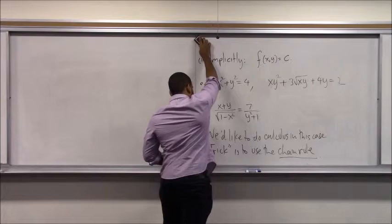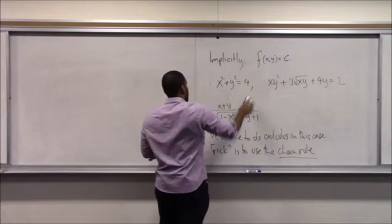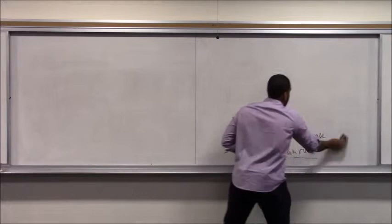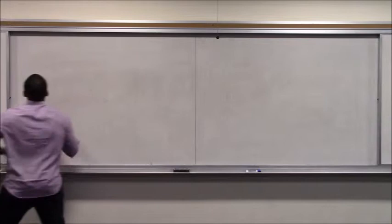You have two ways to define a function: explicitly and implicitly. Explicitly is the way we've always been defining it, and you can find derivatives there using what we've already done. But when your x's and y's are mixed up, jumbled together, you can't isolate the y — you need something else. So let's do some illustrative examples.